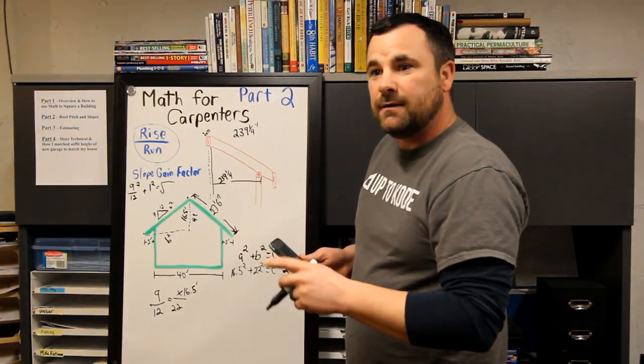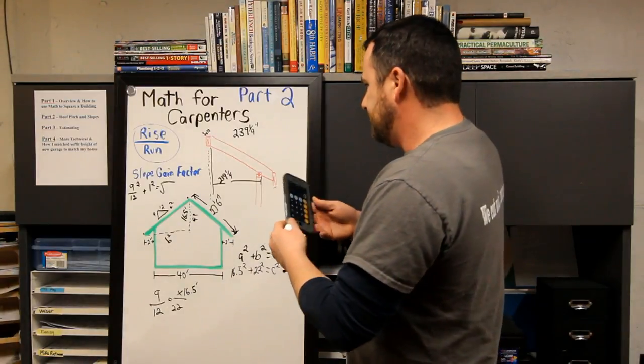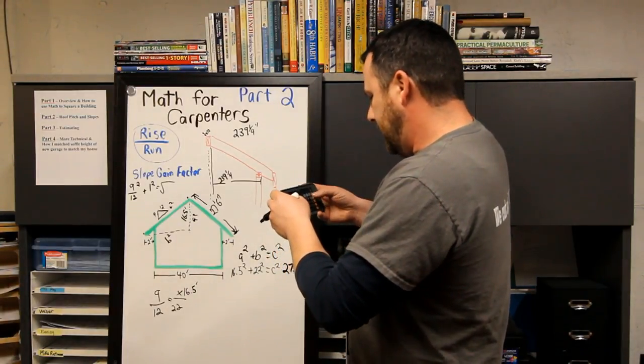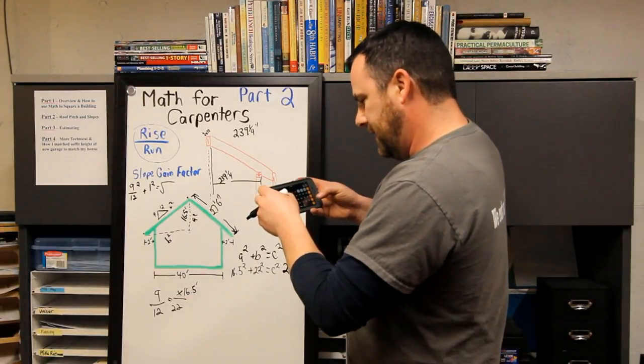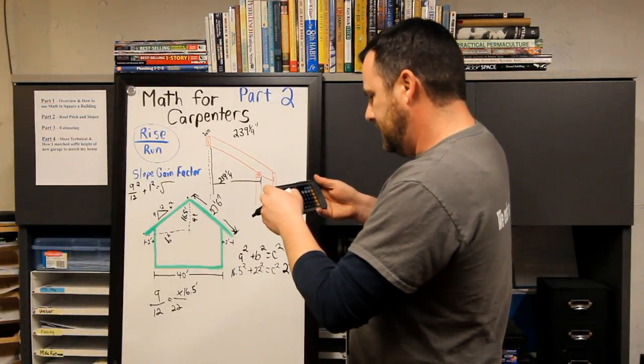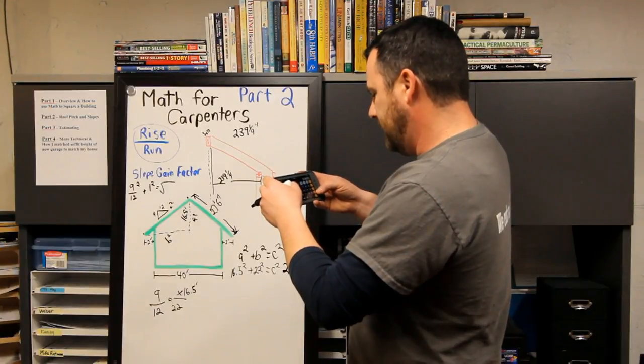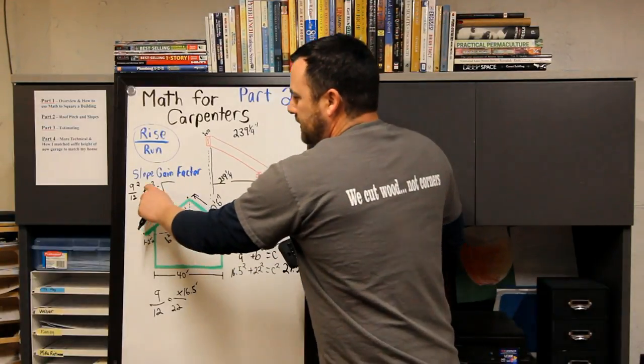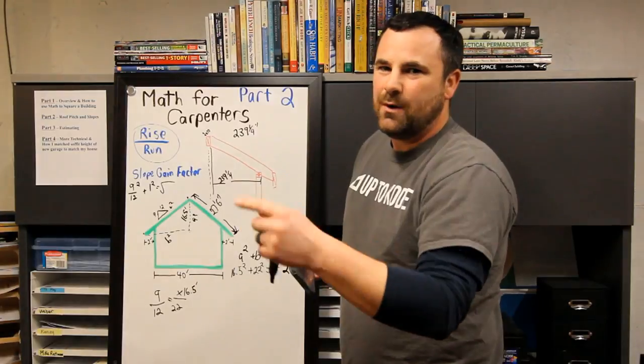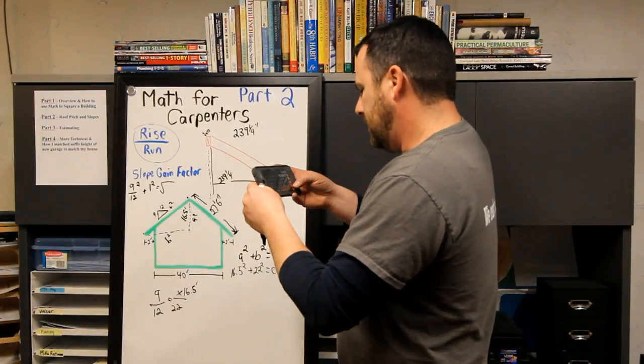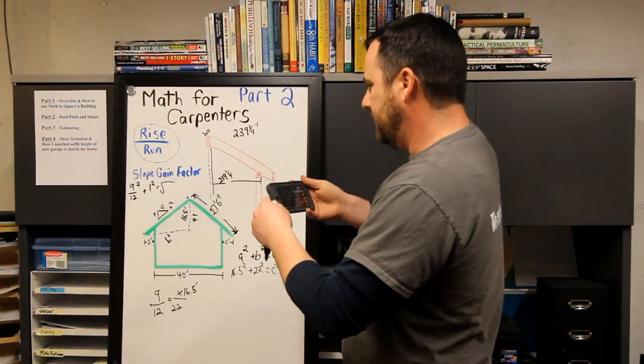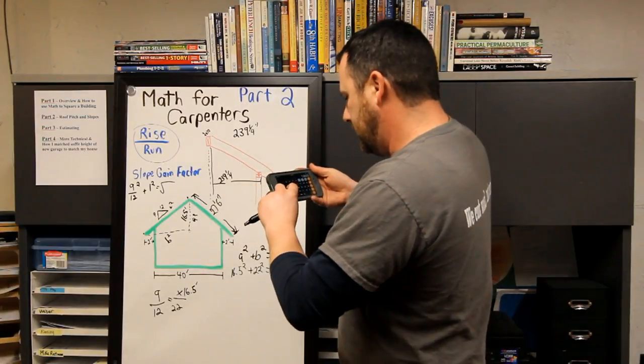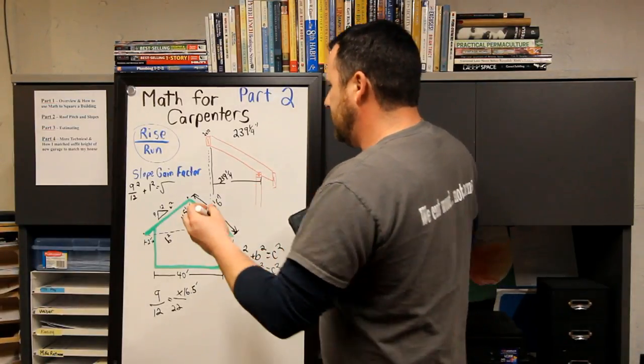So 9 divided by 12 equals 0.75. Square that is 0.5625. Now if you just add one, because one squared is still one, so plus one equals 1.5625. But I have to square root that: 1.25.